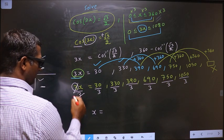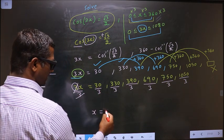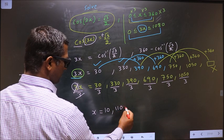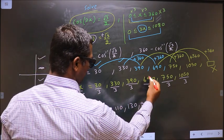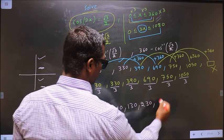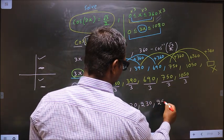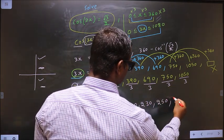So here we get x equal to, this is 10 and this is 110, this is 130, this is 230, this is 250, this is 350.